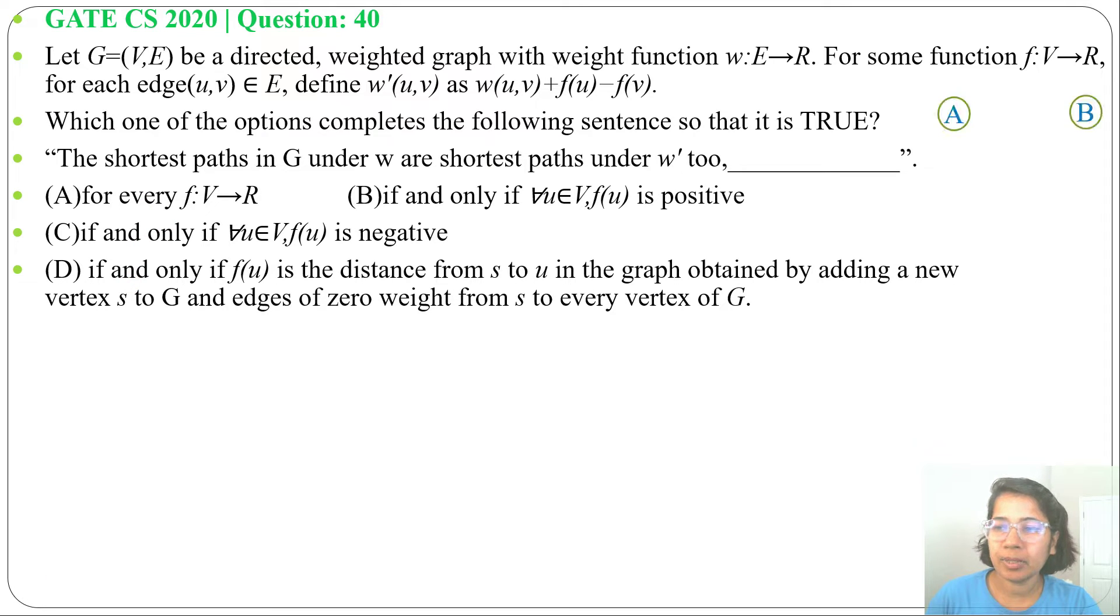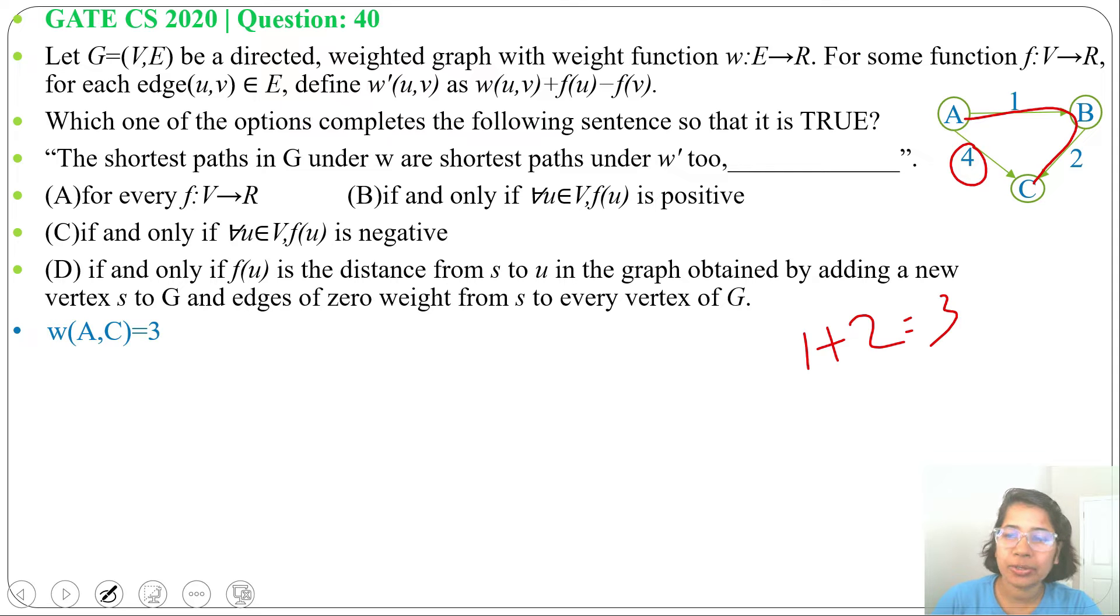Let's take an example. We have a directed weighted graph. Let's say weights are 1, 2, and 4. Now, shortest path cost from A to C is 1 plus 2, it's 3. Direct path cost is 4, whereas shortest path cost is 3 via B. So W(A,C) equals 3.